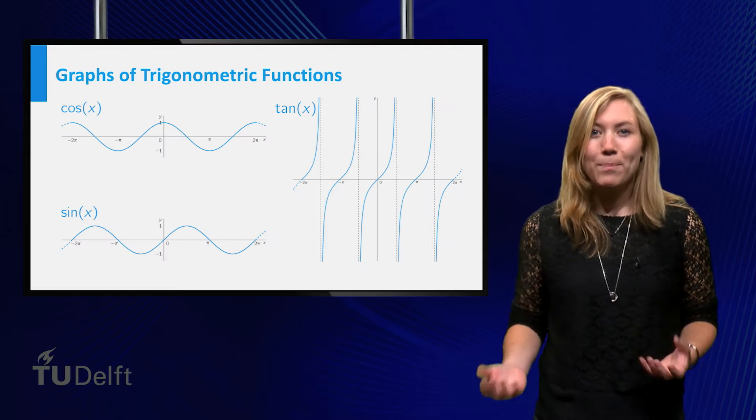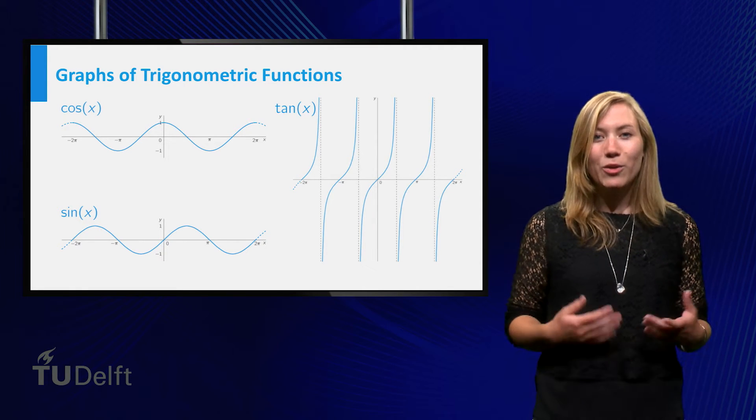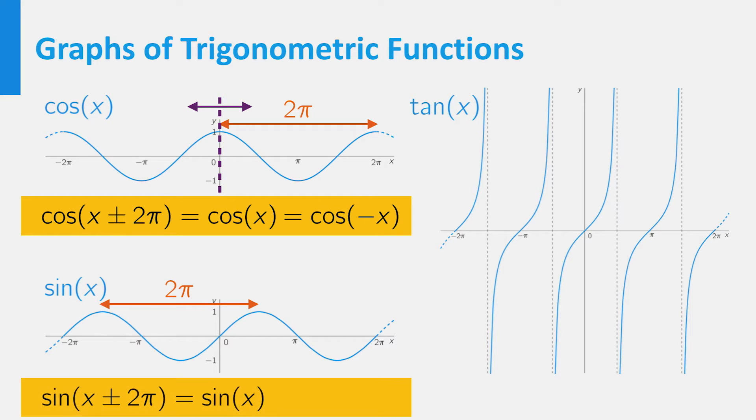As you learned last week, another important method to visualize functions is to look at the graph. The graph of the cosine is periodic, and you can see it is symmetric in the y-axis, so the cosine is even. The graph of the sine is also periodic, and point symmetric in the origin, so the sine is odd.